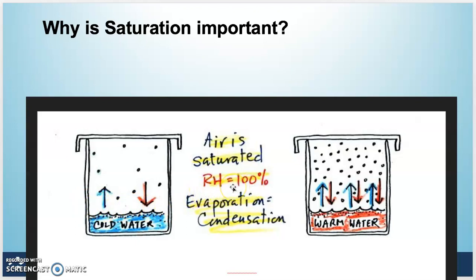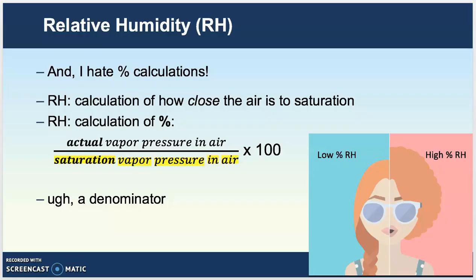When relative humidity is 100%, the atmosphere is saturated. The calculation for relative humidity is actual vapor pressure in the atmosphere over saturation vapor pressure. I hate this calculation — I'll spend about five minutes on it and then not mention it again. Relative humidity is how close the air is to saturation. I hate percentages, denominators, and quotients — essentially everything about this calculation.